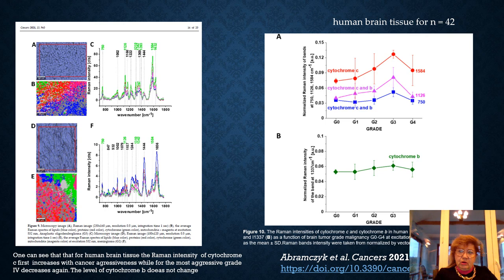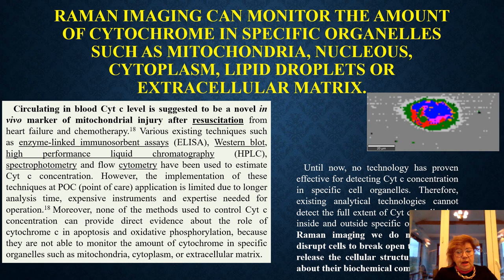For human brain, one can see that the Raman intensity of the cytochrome first increases, and for the most aggressive grade it decreases. The level of cytochrome B does not change with cancer aggressiveness. Until now, no technology has proven effective for detecting cytochrome C concentration in specific cell organelles.